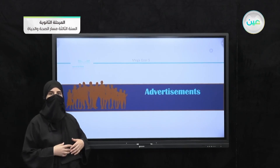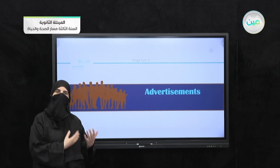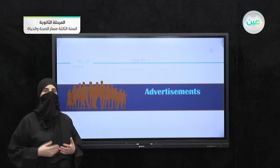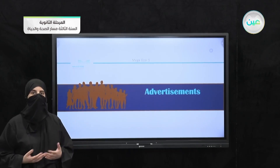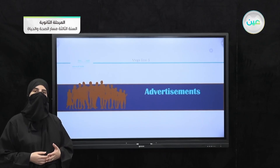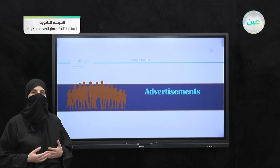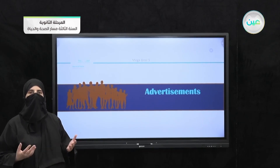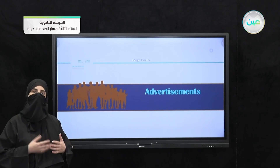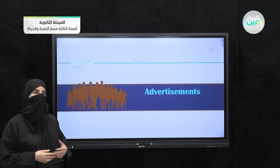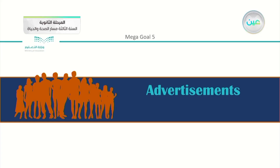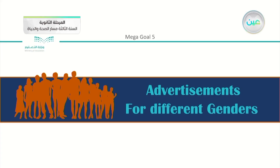They can be for older people, they can be for young people or children, they can be for mothers, they can be for family, they can be for teenagers or younger people. So there are different types of advertisements, and of course they can be for different genders.